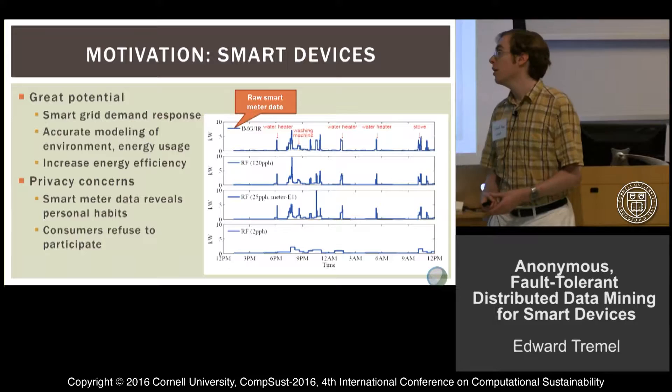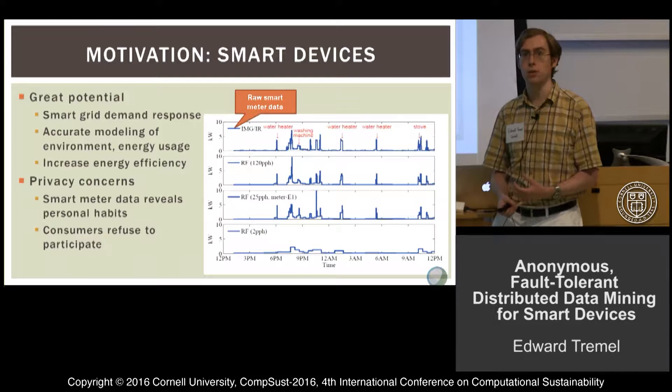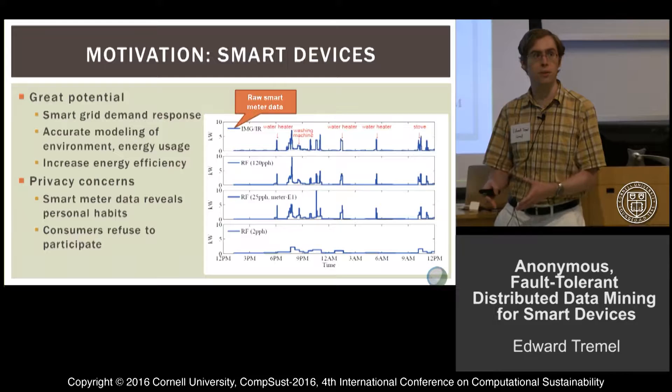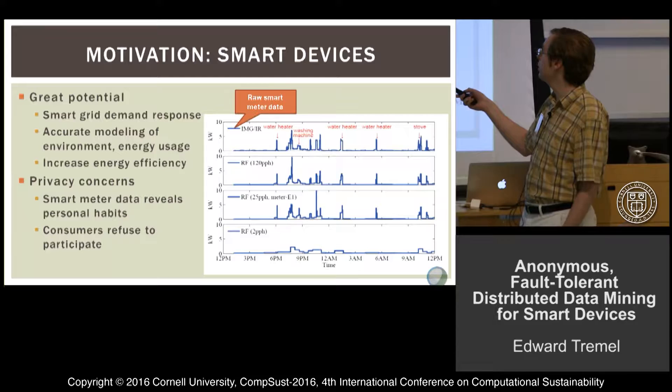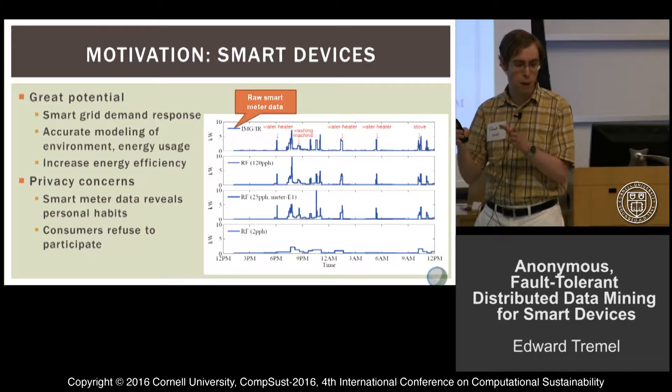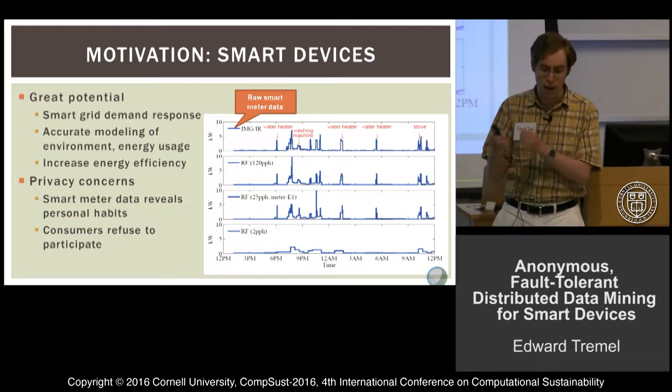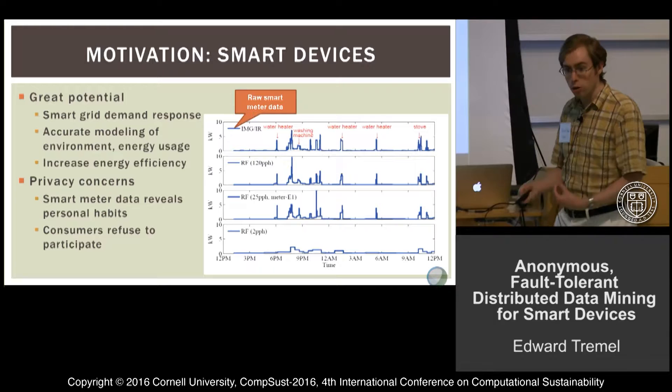The problem that we're addressing with this system is the privacy concern. There's a lot of resistance in communities to adopting things like smart meters because people are concerned that the utility company can monitor and profile them very closely using this smart meter data. This is an example of the kind of data you get from a smart meter and how you can disaggregate the house power draw into each device turning on and off if you have the kind of fine-grained data that a smart meter provides.